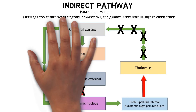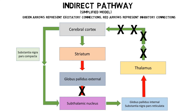Neurons from the substantia nigra pars compacta travel to the striatum via the nigrostriatal pathway, and they can modulate the activity of the indirect pathway through dopamine release in the striatum. One effect of this seems to be the inhibition of activity in the indirect pathway, which leads to the facilitation of movement.